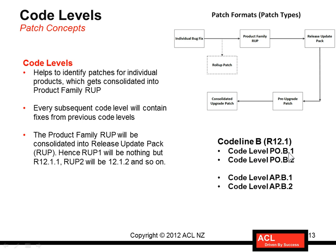The code level uses letters A, B, C which keep incrementing. For example, code level B corresponds to release 12.1. The first product family RUP for the Purchasing module would be identified with code level PO followed by B1. The next month, if new fixes are released, they get identified with an incremented code level number. So code level uniquely identifies a specific product and the number of patches consolidated into a product family. Similarly, for AP in release 12.1, the first product family release is version one, and the next is version two.